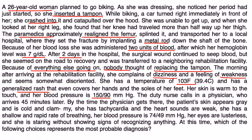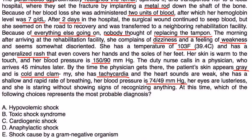By the time the physician arrived 45 minutes later, the patient's skin appeared gray and was cold and clammy. She had tachycardia, weak heart sounds, and a shallow and rapid rate of breathing. Her blood pressure was now 74 over 49. Her eyes were lusterless, and she was staring without showing signs of recognizing anything. This is a classic scenario of toxic shock — a tampon placed and not removed for days gave a perfect environment for Staph to grow and enter the bloodstream, resulting in the classic symptoms: rash, low blood pressure, and fever.